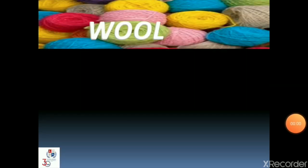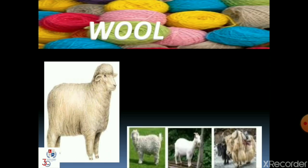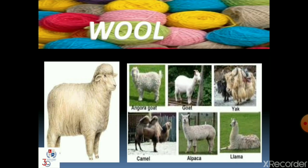Now let's know about wool. In India, mostly sheep are reared for getting wool. Wool is also obtained from goat, angora goat, and yak. Besides, the hair of camel, alpaca, and llama are also processed to yield wool. For obtaining wool, sheep are reared and bred, their hair is cut and processed into wool.